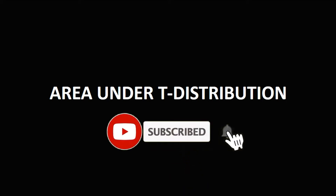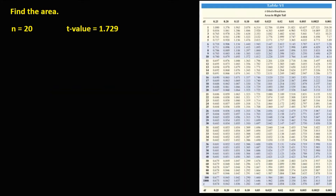So let's have this problem. Find the area under the T distribution. We have this given: find the area with sample size equals 20 and the T value that's 1.729.